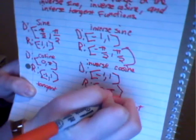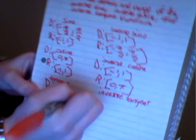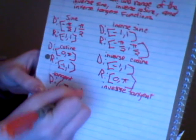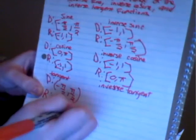And for the tangent, to make it pass the horizontal line test, we also have to restrict the domain and the range. For the tangent, the domain is going to be negative pi over 2 to pi over 2.